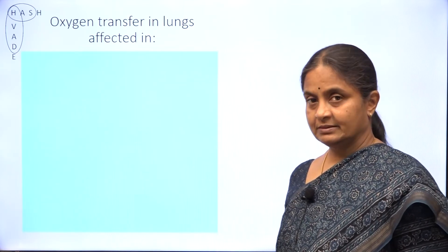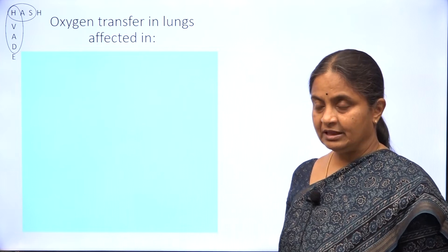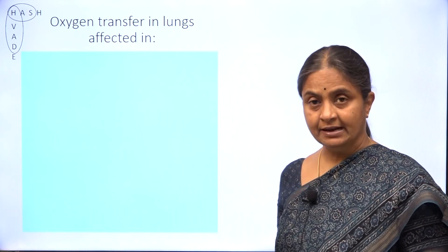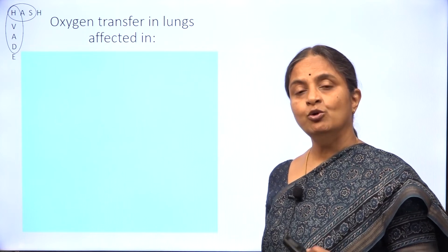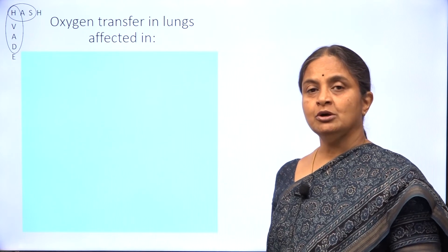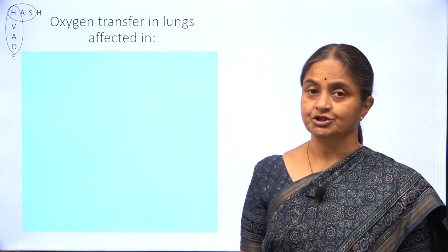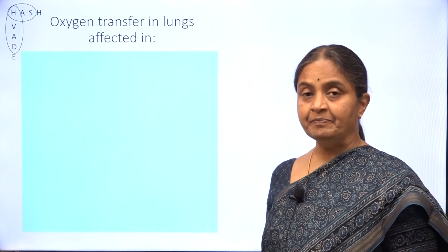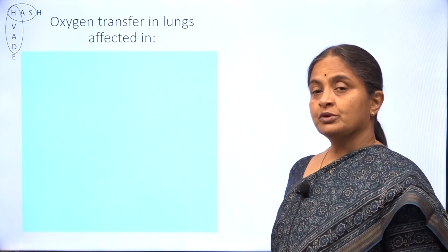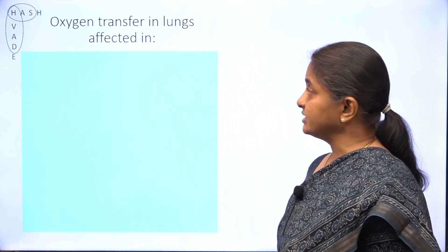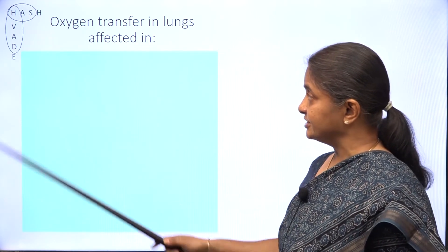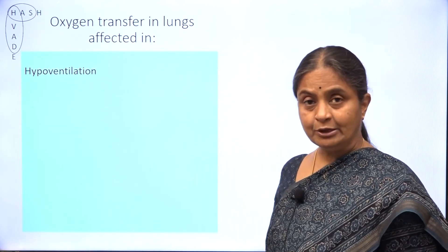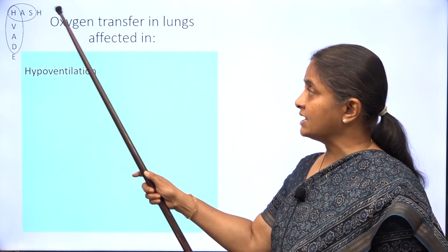To review what we did in the previous lecture, we saw that oxygen transfer in the lung — what we call VO2, or oxygen consumption at the tissue level, or oxygen uptake at the lung level — is affected in the conditions listed here: hypoventilation. Remember the mnemonic that we have been using: HASH and WADE.